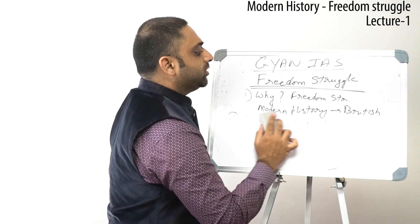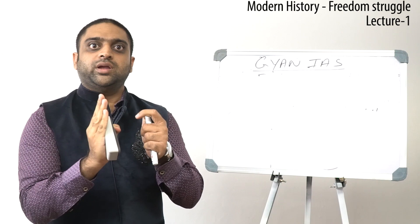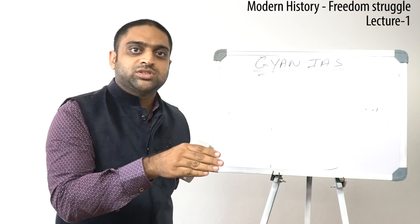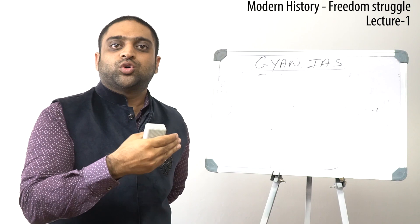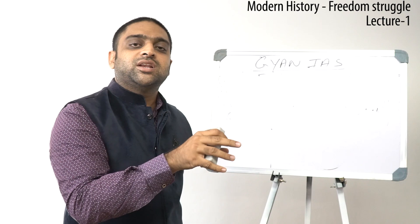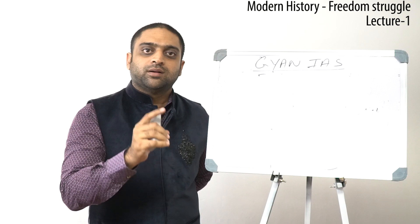To address the topic of why freedom struggle happened during the modern history period: in ancient history, first the Aryans invaded India and set up their own civilization. Then various great kingdoms — the Indo-Greeks, the Kushans, the Sakas — all these people invaded India from the outside world. They came here, set up their kingdoms, and ruled India for centuries, but there was no freedom struggle, because two main processes were happening during this phase.